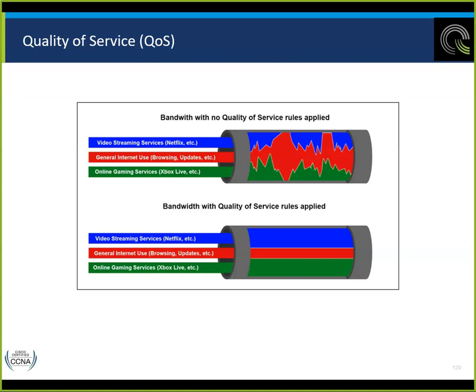These are images showing with and without quality of service. Without QoS, general use — browsing, updates — interferes with video streaming and online gaming. Let's put emergency phone calls in there too. We have the ability to assign a certain amount of bandwidth to certain types of traffic and certain priorities. Up here we have enough bandwidth for Netflix, Amazon videos, or maybe even a Zoom session.